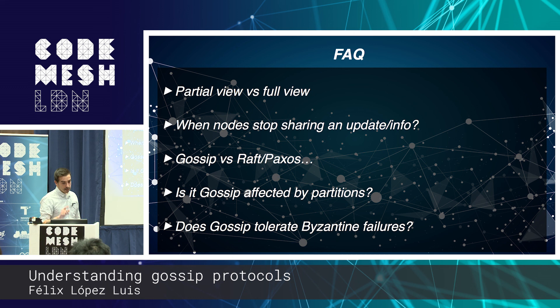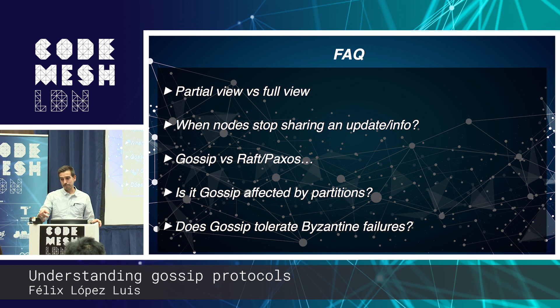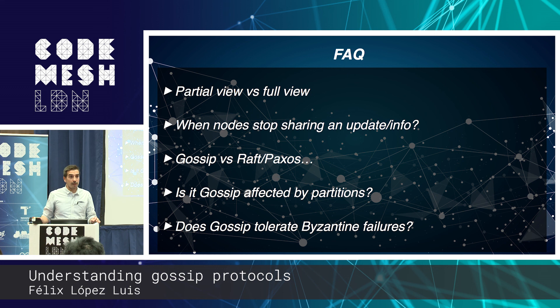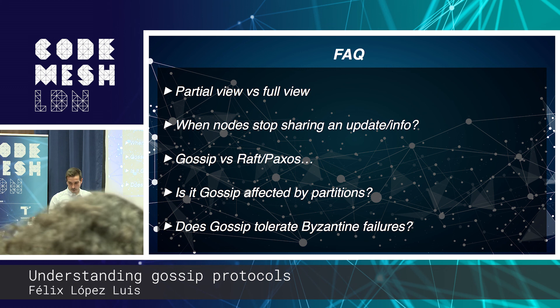Is Gossip affected by partitions? Yes. If half the nodes are on each side of a partition, both partitions will gossip happily as if the others are dead. There are solutions — when the partition heals, nodes can reconcile. Serf is a good example of how to handle this. Do they support Byzantine failures? Typically not. Though I found a paper attempting something like consensus — waiting to receive the same message from multiple nodes before considering it true — but in my opinion that approach affects the core properties of Gossip protocols.